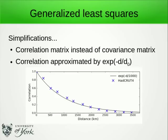Where does the covariance matrix of observations come from? We can work it out from the observations we have. It turns out that the covariance drops with the distance between two observations. For technical reasons we use the correlation matrix instead of the covariance matrix, and that's well modelled by an exponential function — observations which are close together show good agreement, dropping with distance.